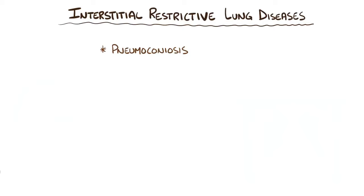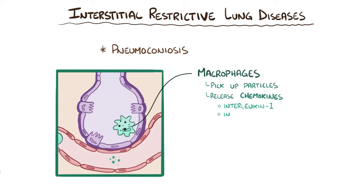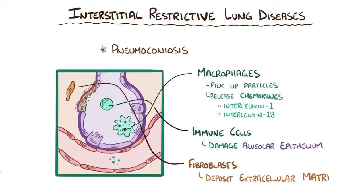All of these different particles — carbon dust, silica particles, and asbestos fibers — can cause an immune reaction to develop. When macrophages pick up these particles, they release chemokines like interleukin-1 and interleukin-18, which cause a huge immune response. As more immune cells are recruited, cytokines released by these immune cells damage the alveolar epithelium. Fibroblasts then arrive to try to repair the damage by depositing extracellular matrix composed of collagen.